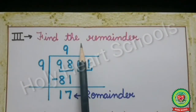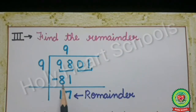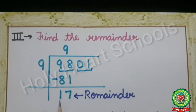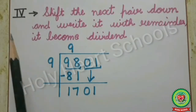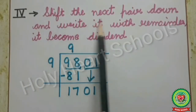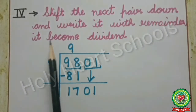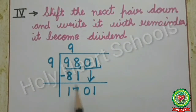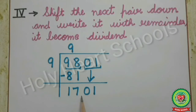The next step is to find the remainder. We subtract 81 from 98 and get 17 as our remainder. Then the fourth step is to shift the next pair down and write it with the remainder — it becomes the new dividend. Our remainder is 17; we shift the next pair, 01, down and write it with 17, so 1701 becomes the dividend for our next step.